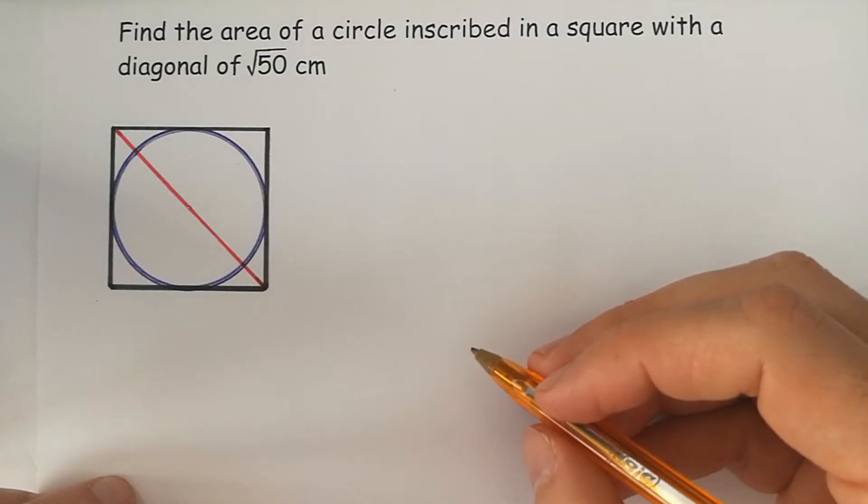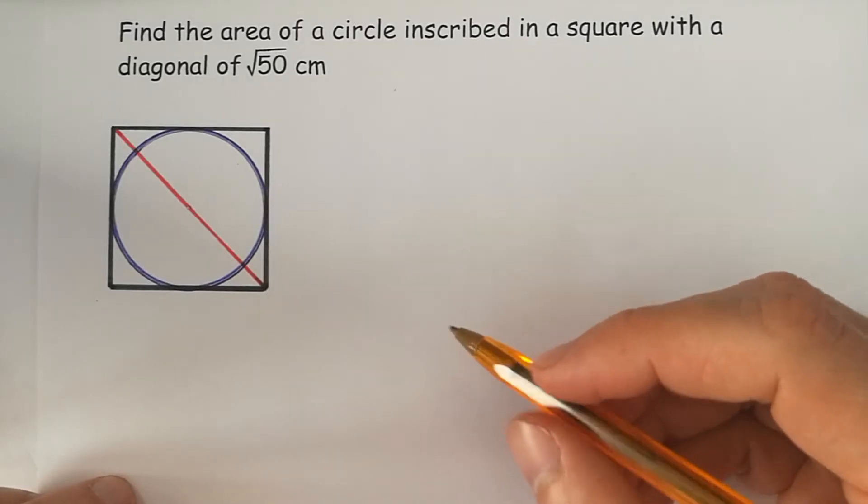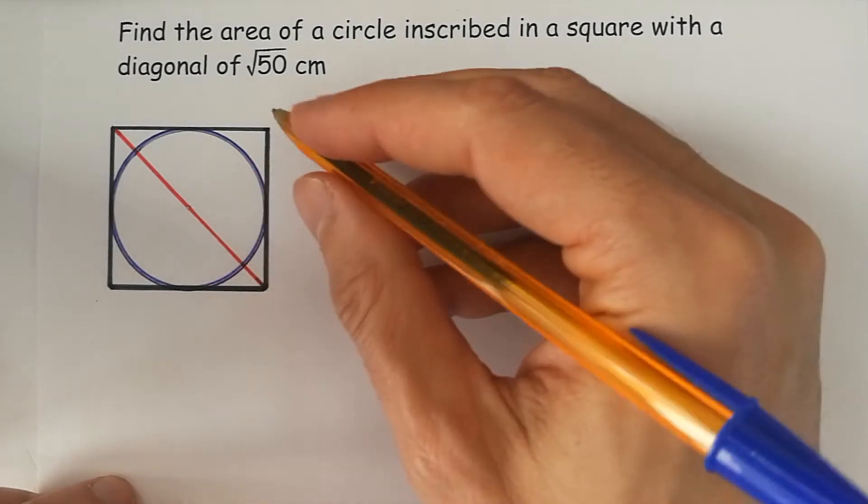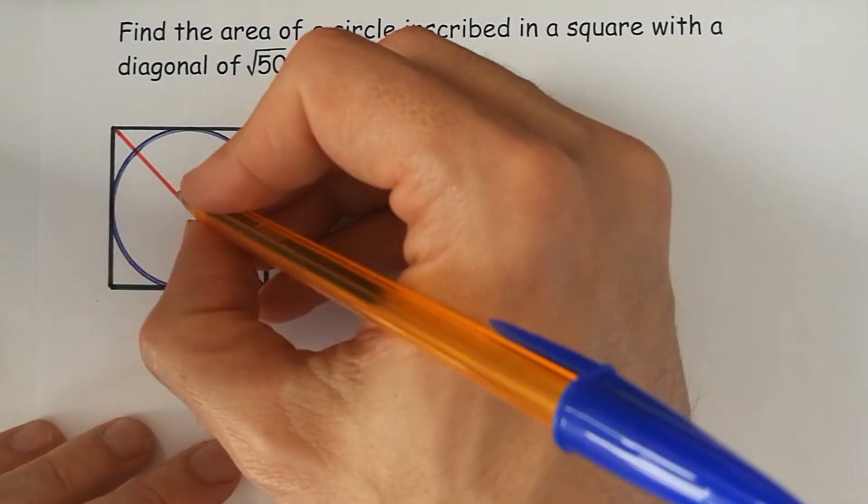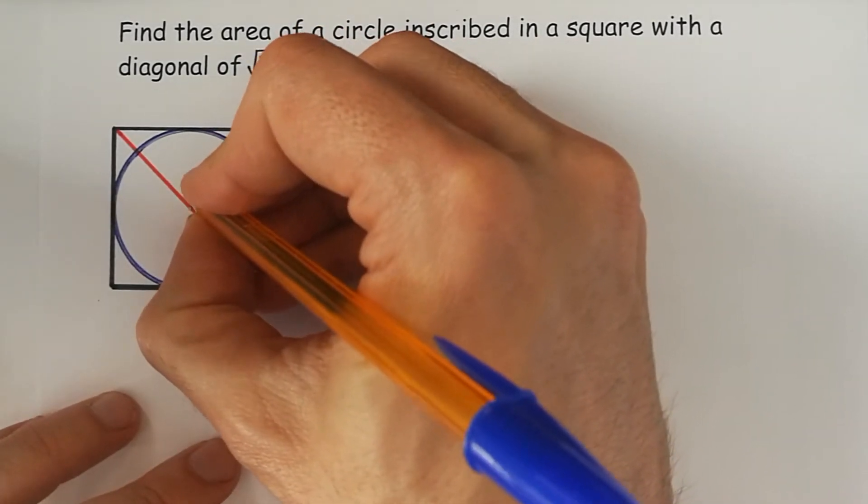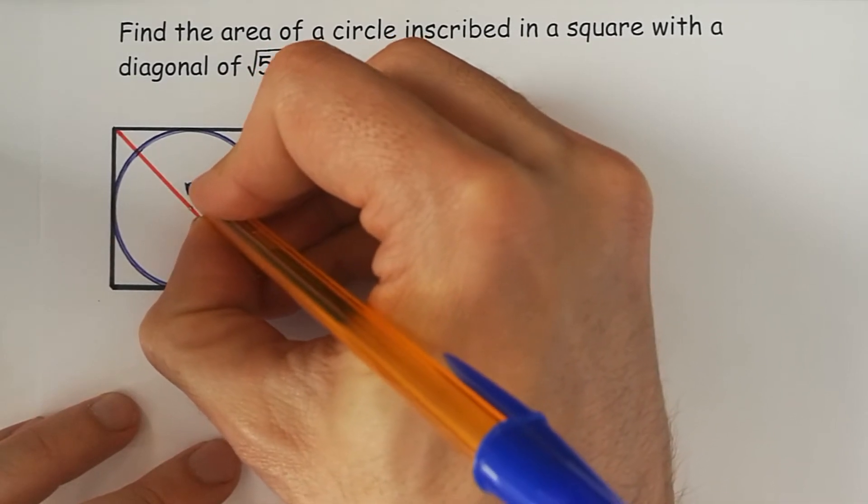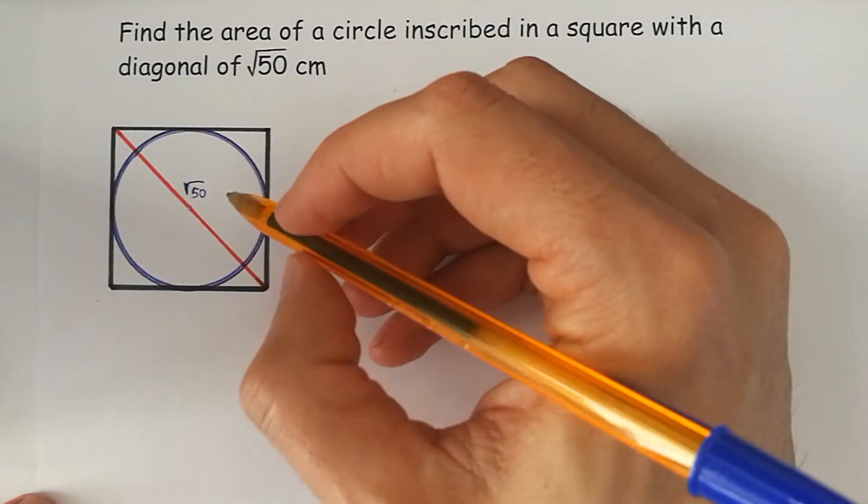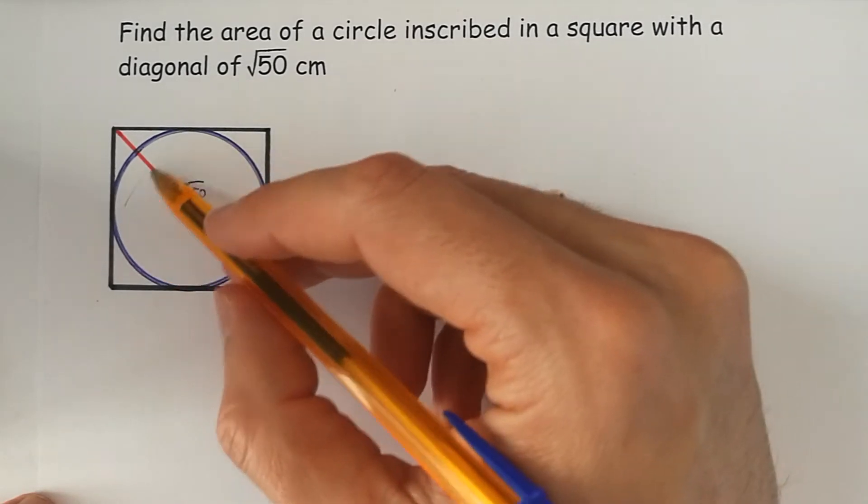Find the area of a circle inscribed in a square with a diagonal of square root of 50 centimeters. So we're given just this length and we want to know the area of the circle.